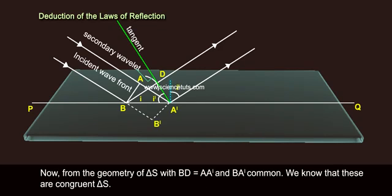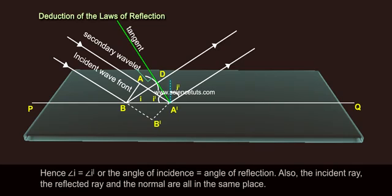Now, from the geometry of the triangles with BD equals to AA' and BA' common, we know that these are congruent triangles. Hence, angle I equals to angle I', or the angle of incidence equals to angle of reflection.